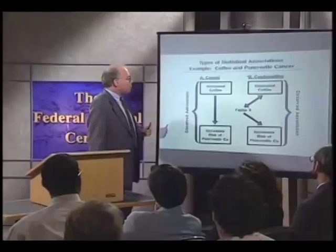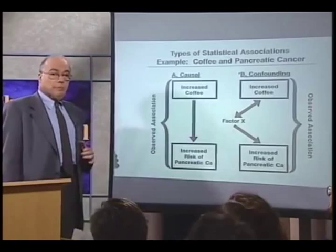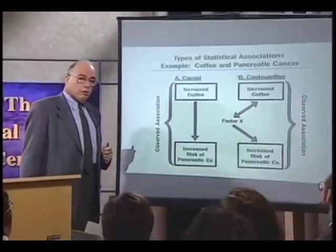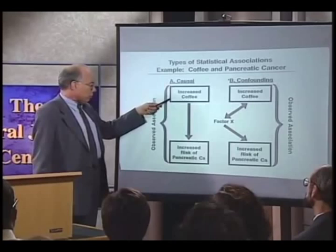Here is another example. Many years ago, Dr. Brian McMahon, professor and chairman of the Department of Epidemiology at Harvard, reported an association between increased coffee consumption and cancer of the pancreas. The question arose: was the association he reported a causal one, or was it the result of confounding? On the left, a causal relationship — increased coffee consumption causes an increased risk of cancer of the pancreas. On the right, the same observed association exists because both are associated with factor X.